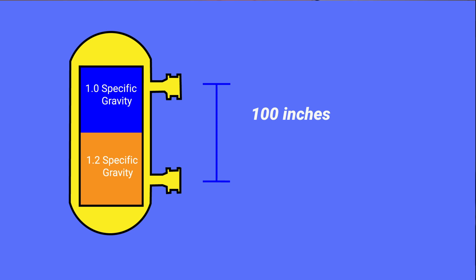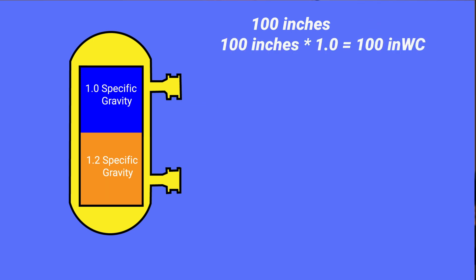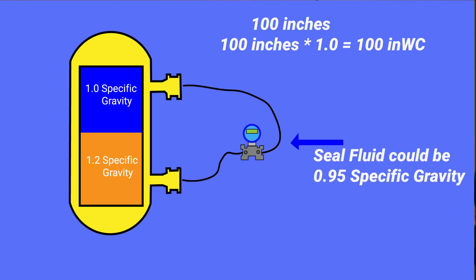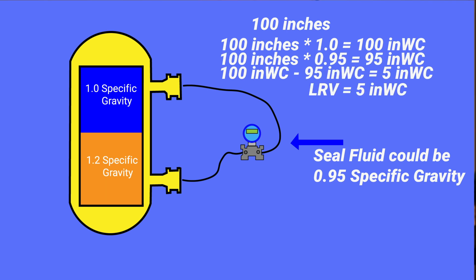Let's first look for the LRV. That will give us a 4 milliamp output from the transmitter. The formula is taking 100 inches multiplied by the lower specific gravity of 1.0, which is 100. Now let's subtract that number of 100 from the value of 100 inches multiplied by the specific gravity of the seal fluid inside the capillary, which could be 0.95. That would be 95 inches. So 100 minus 95 is 5, so the LRV or the lower range value will be 5 inches of water.